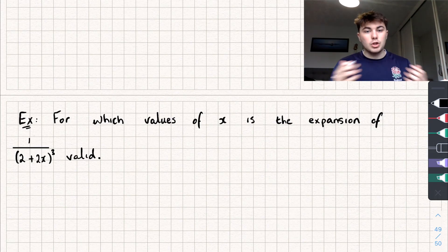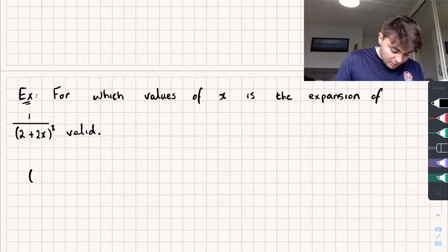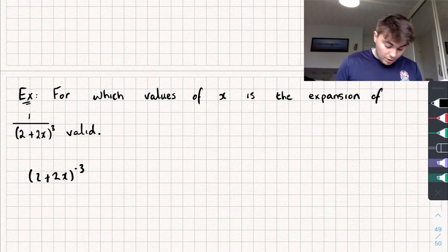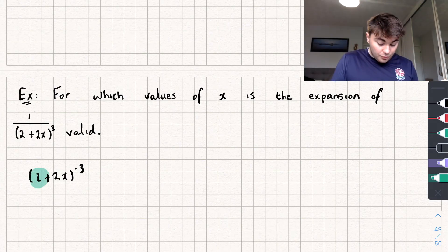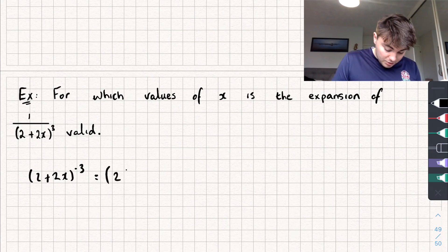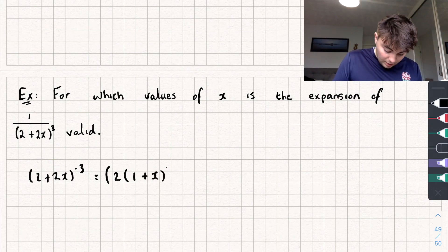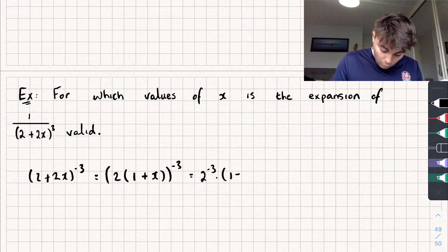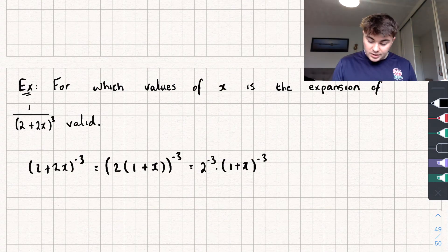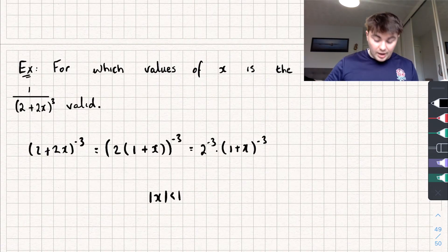The final and trickiest example asks: for which values of x is the expansion of 1 over (2 + 2x) cubed valid? Rewriting as (2 + 2x) to the power of negative 3, we notice the leading term is 2, not 1. We factorize out the 2: this becomes 2(1 + x) to the power of negative 3, which distributes to 2 to the negative 3 times (1 + x) to the negative 3. Now it's in the standard form, so we simply need |x| < 1.